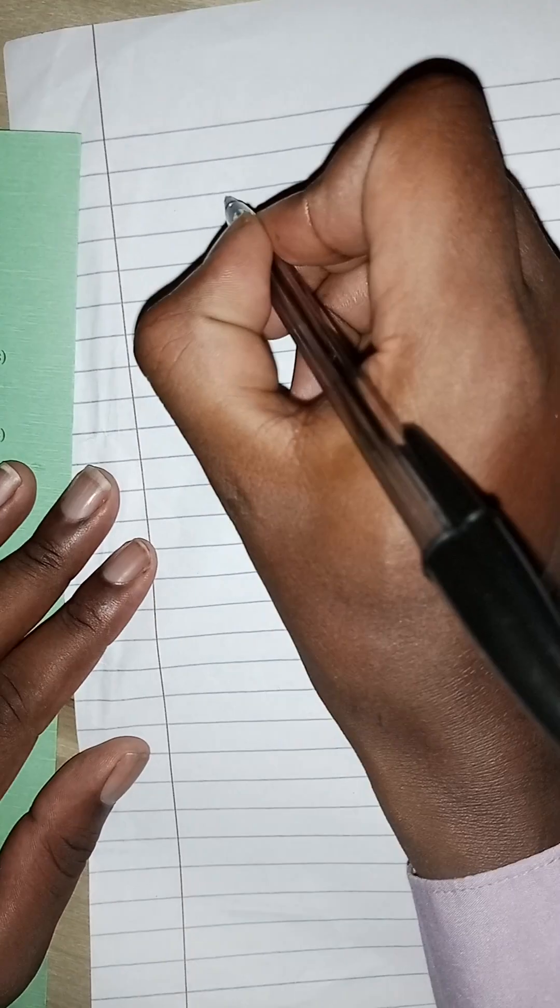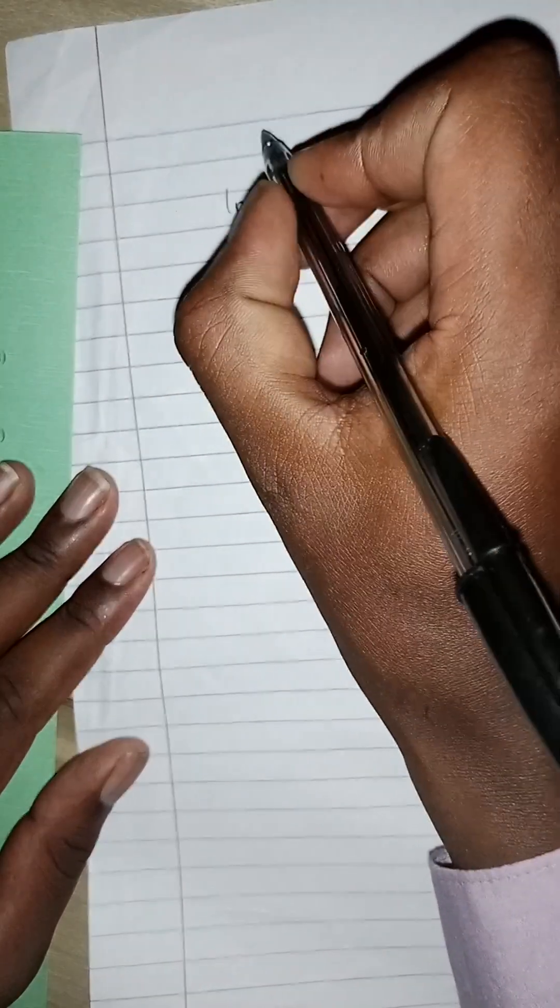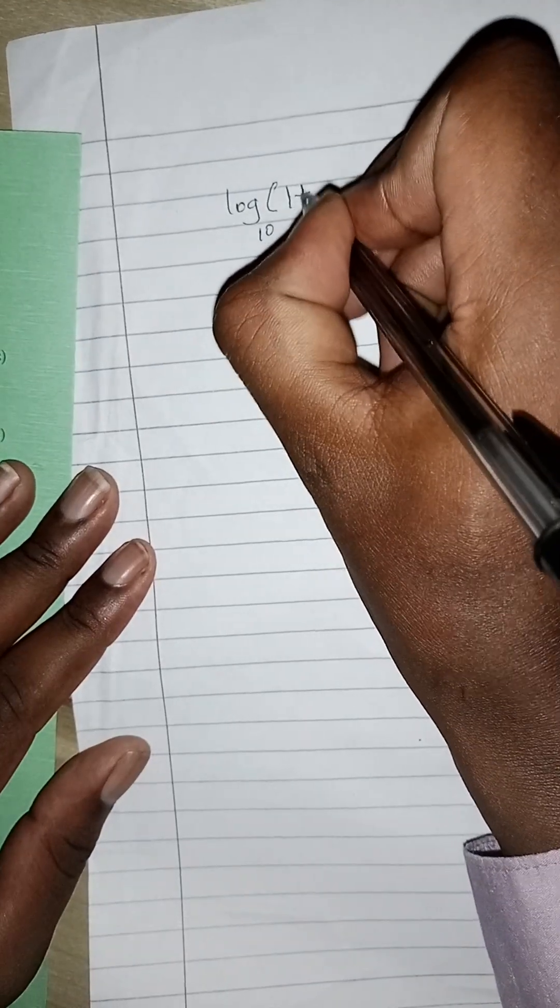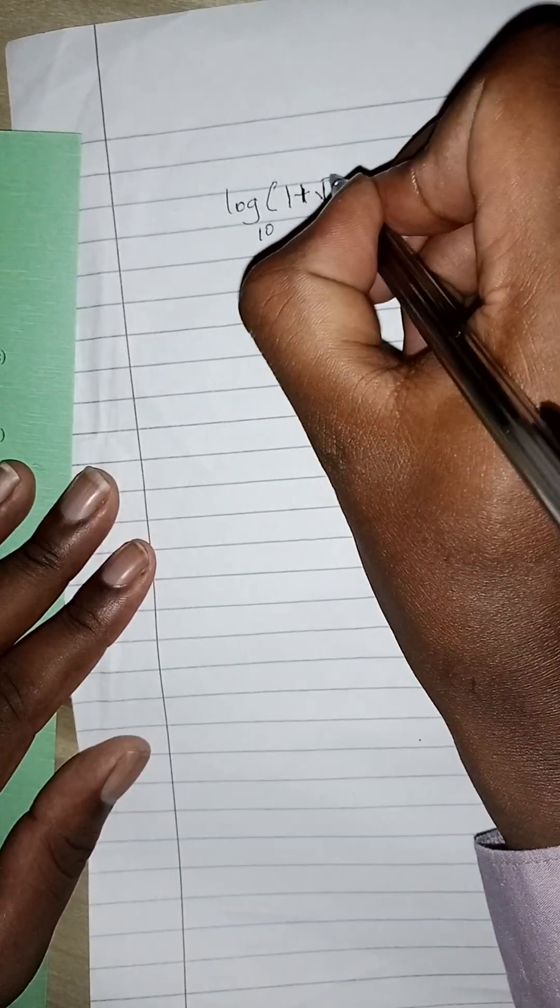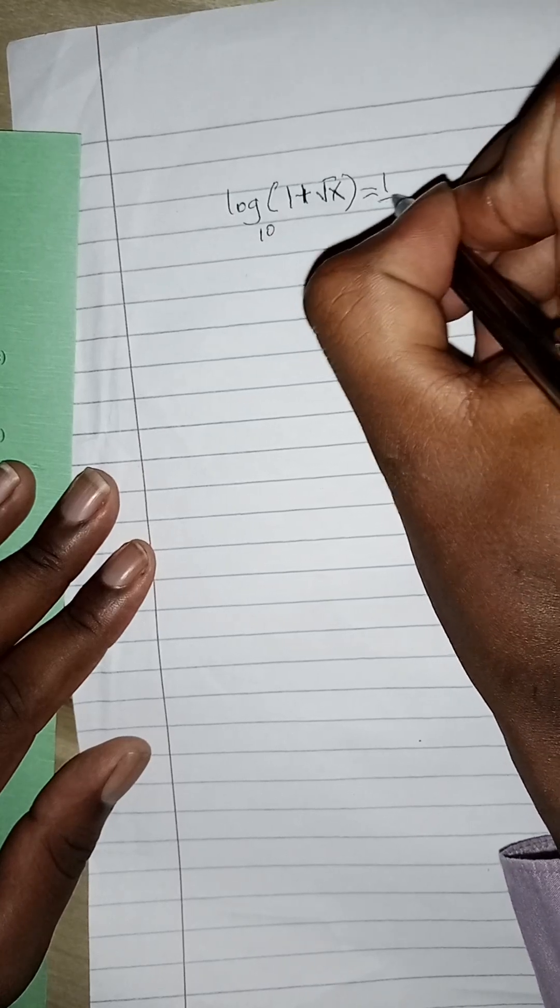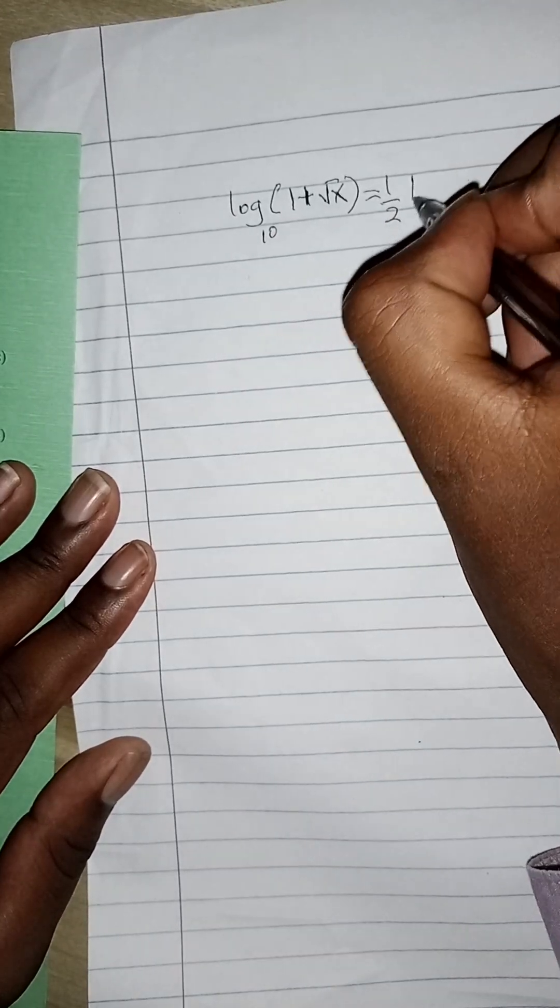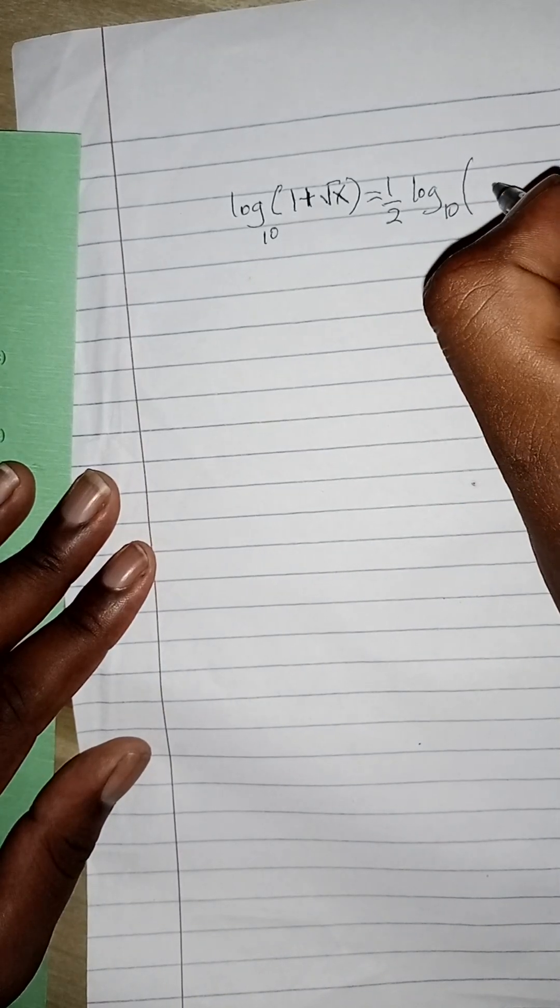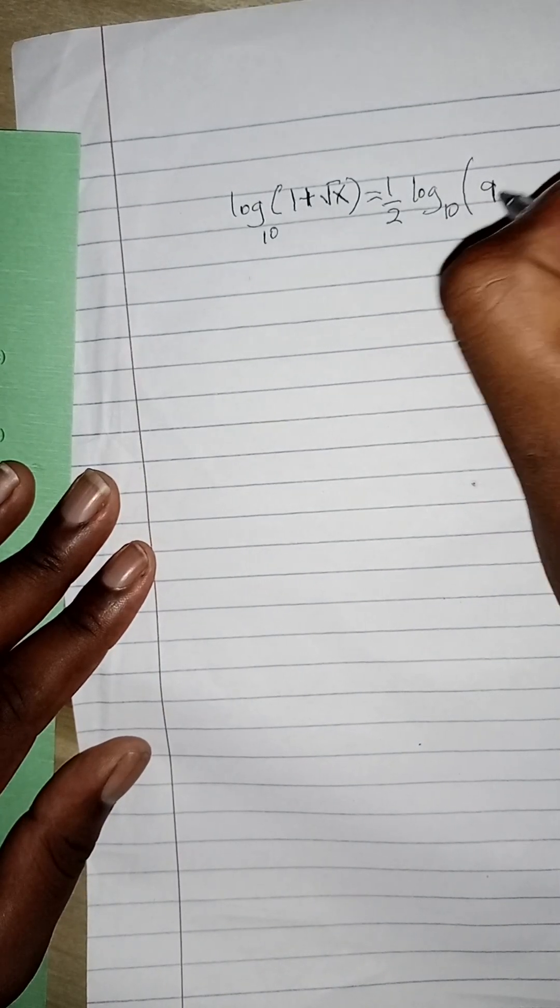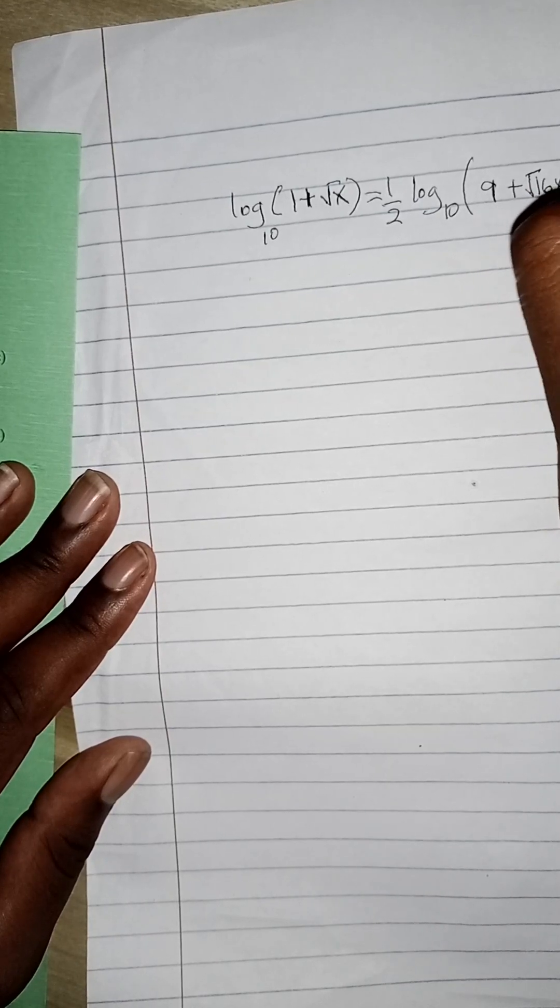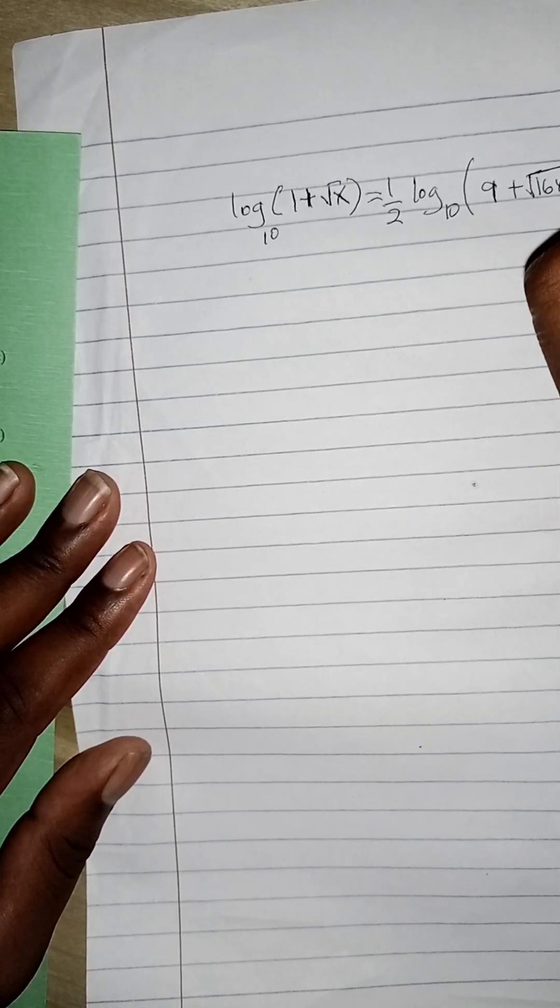Now the question is saying log to base 10 of (1 plus root of x) is equals to a half log to base 10 into bracket (9 plus root of 16x) close the bracket.